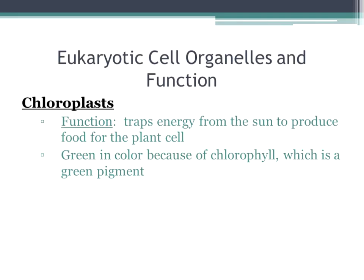Here's another difference: chloroplast. Chloroplast traps energy from the sun to produce food for the plant. Chloroplasts are the main thing that does photosynthesis. In biology, we're going to get more in-depth about it. The chloroplast is the organelle that completes photosynthesis. They're green in color because of chlorophyll, which is a green pigment. So that's what they do — they're green, they help do photosynthesis, and they make food for the plant cell.